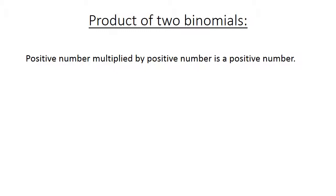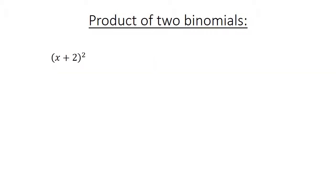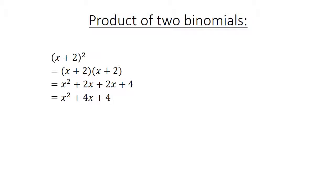Product of two binomials: a positive number multiplied by a positive number is a positive number. A positive number multiplied by a negative number is a negative number. For example, (x plus 2) squared equals (x plus 2) times (x plus 2), which equals x squared plus 2x plus 2x plus 4, equals x squared plus 4x plus 4.